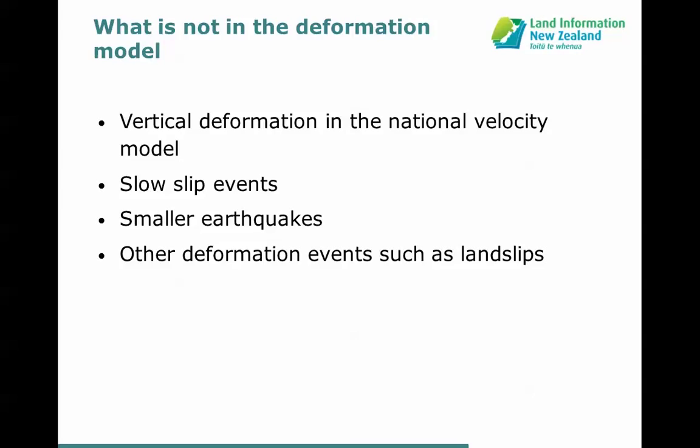Other things not included are events that are more localised or smaller. Slow slip events are a good example — these happen maybe every three to six years in various locations around the country. They are earthquakes that happen slowly, over a period of a month or several months. We don't include them mainly because we don't yet have good enough models of the deformation they cause. Similarly, smaller earthquakes causing only minimal distortion that don't affect coordinate accuracy at a significant level won't be included, nor will events such as landslips.